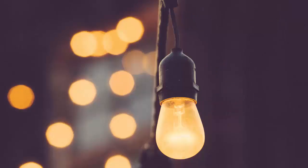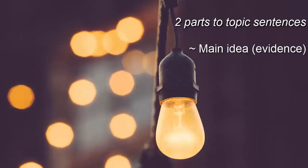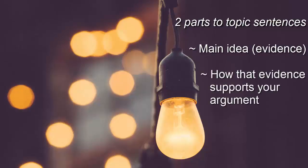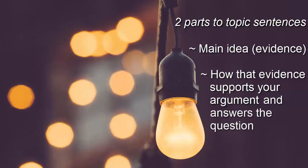There are two parts to topic sentences. One part is that the sentence has to indicate what the main idea of the paragraph is. This is more about what type of evidence you use in the sentence. The other part is that you have to tell your reader how that evidence supports or fits into your argument. In other words, it explains how the paragraph fits into the overall answer to the question.